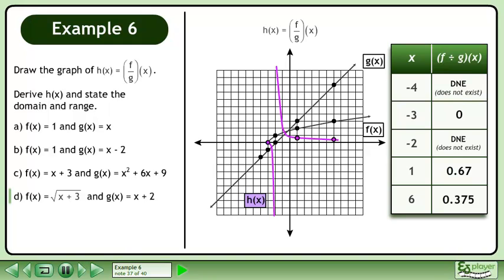We can now draw the graph of h. The left arm of the graph begins at x equals negative 3, since that is the first point where the two graphs overlap. There is a vertical asymptote at x equals negative 2 and a horizontal asymptote at y equals 0.